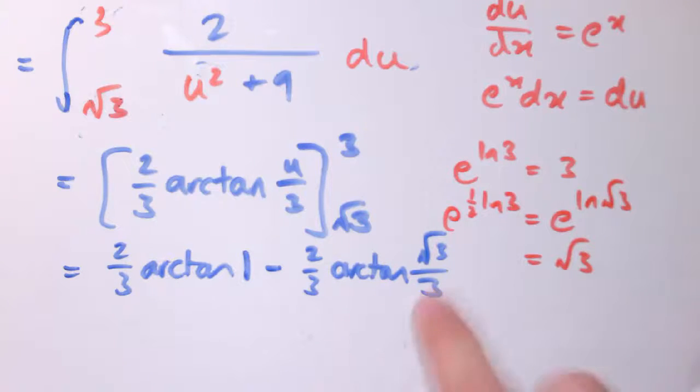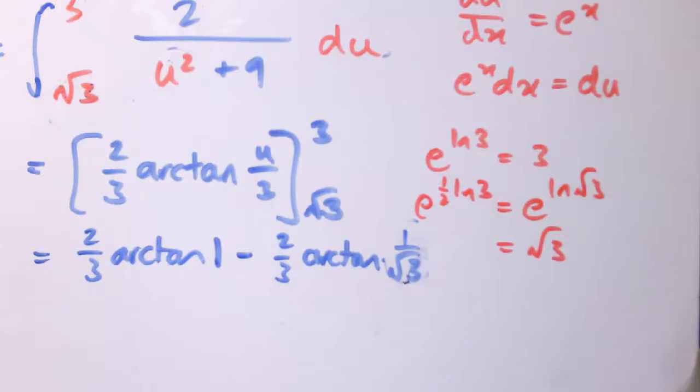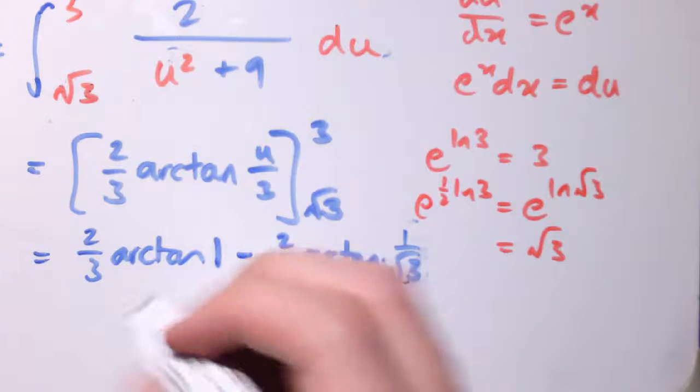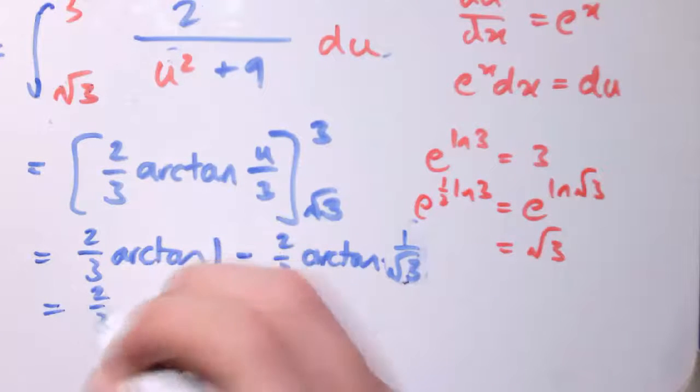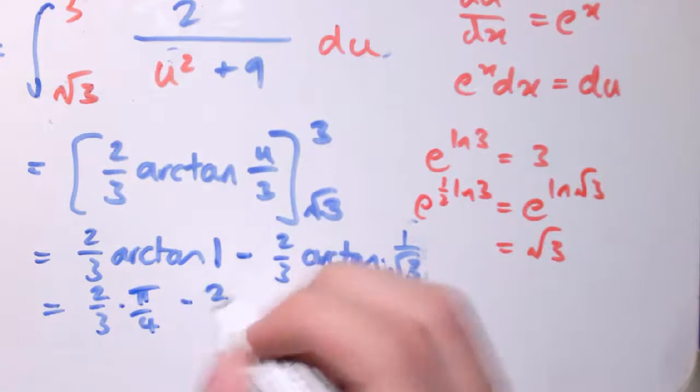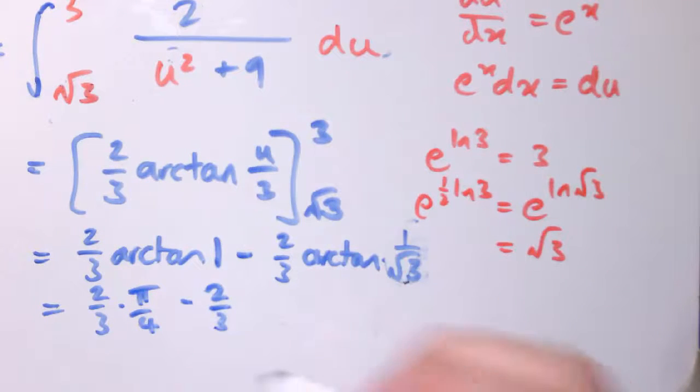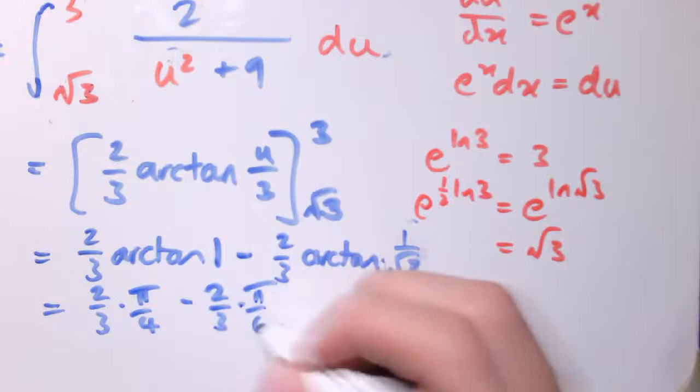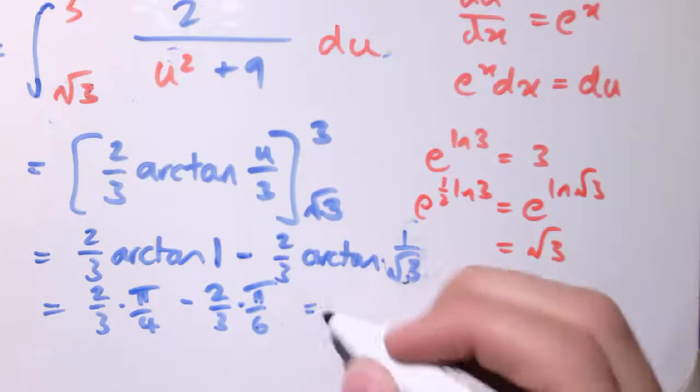Or if you like, √3/3 is just 1/√3. And arctan of 1 is π/4. So that's 2/3 times π/4 minus 2/3 times arctan of 1/√3 which is π/6.